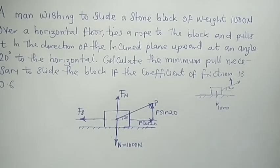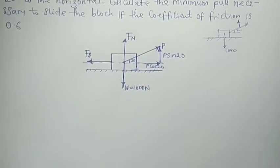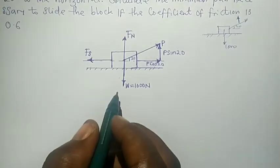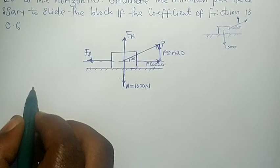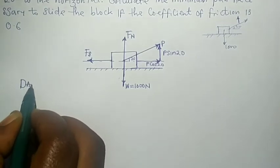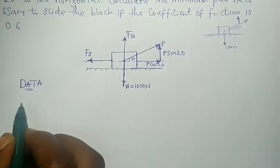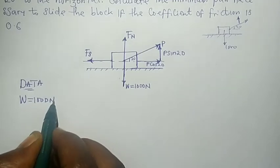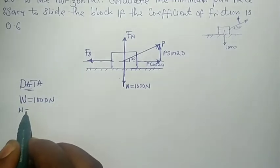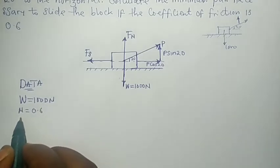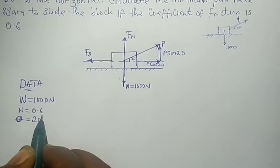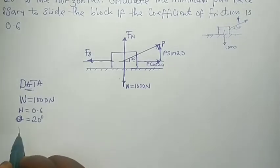From here you're going to write the parameters, the data given. The weight is given as 1000 newtons, and the coefficient of friction μ is 0.6. The angle theta is given to be 20 degrees. Now we are looking for the force P.